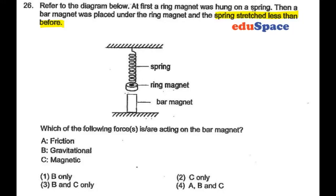In question 26, we have a question of forces, and we're trying to see in this setup here which of the following forces are acting on the bar magnet. So the forces acting on the bar magnet in this case would be magnetic force as well as gravitational force. The answer should be B and C.